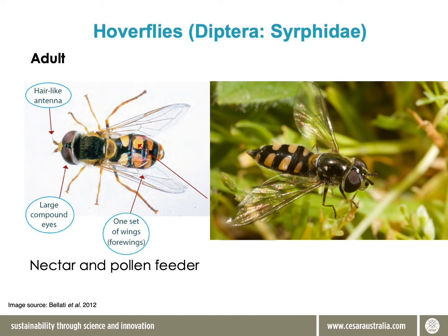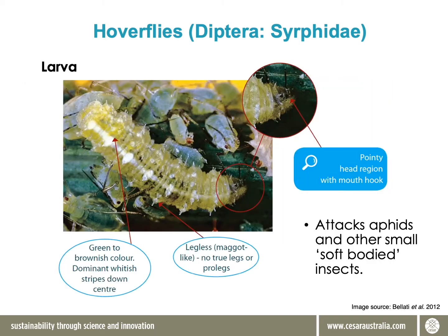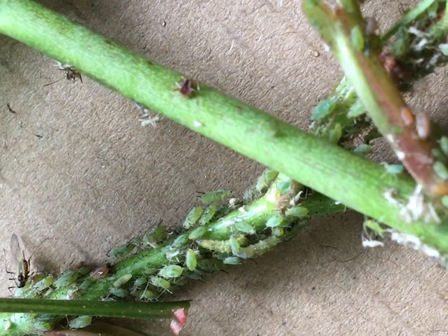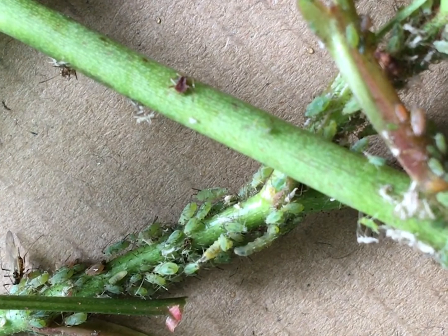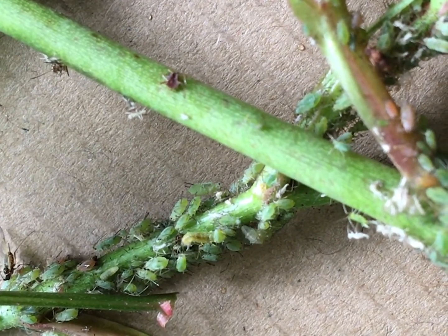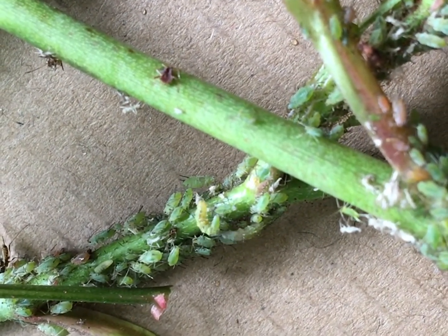In the case of the hoverfly, the adult is not actually a predator — it feeds on nectar and pollen — but the larva is. The larvae are small and generally green, and it's a very common species to see in spring and summer in southeastern Australia. In some cases the larvae will have a white stripe running down their back, and they tend to be only around one centimetre long. They just love to eat aphids.